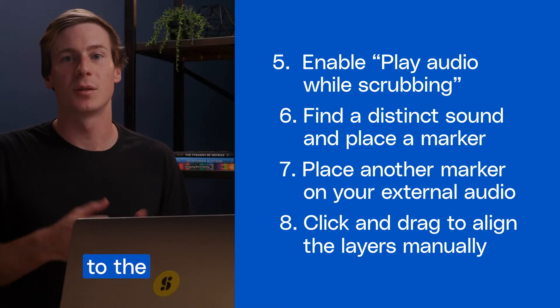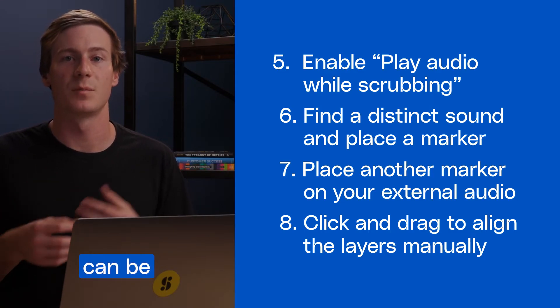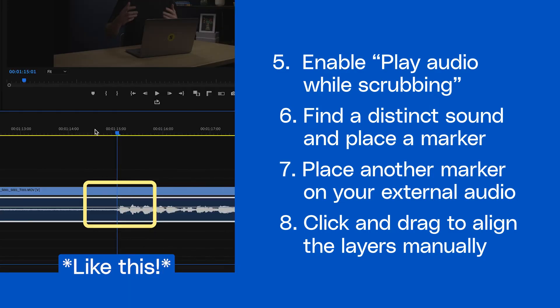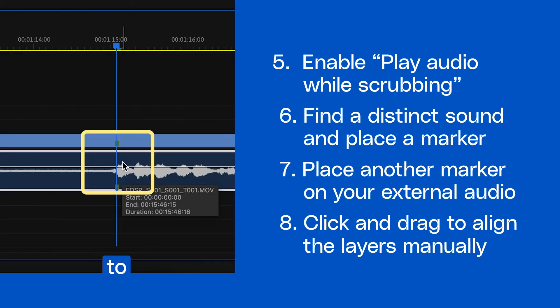Scrub to the portion of your audio where a clear vowel sound can be heard, and with the clip selected, press M to place a marker.